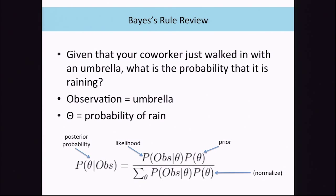Let's review Bayes' rule since we're going to talk about posteriors a lot. Say you're sitting at your desk in your office in the morning and your coworker comes in with an umbrella. The likelihood of seeing the umbrella given that it is raining is pretty high, especially in Boston in the spring when it rains all the time. But in San Diego in summer, where it almost never rains, the prior probability of rain is actually quite low. Applying the likelihood against this low prior greatly reduces the posterior probability that it's raining—maybe your coworker is just using the umbrella because she's fair-skinned and doesn't want a sunburn.